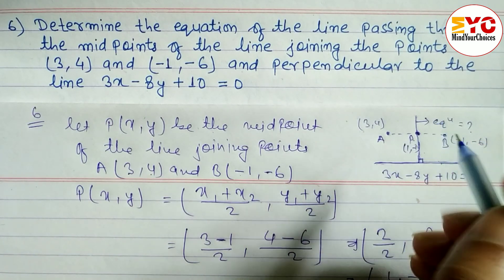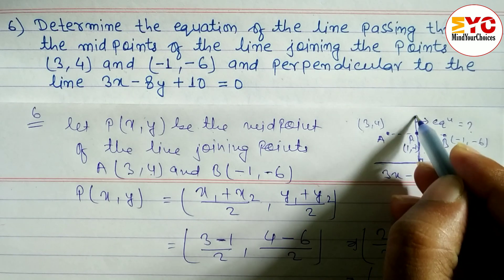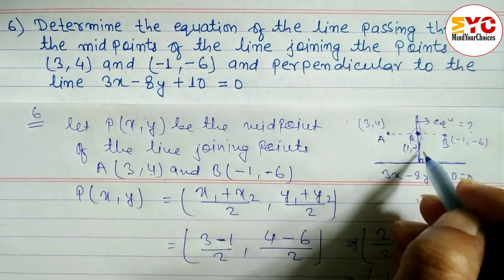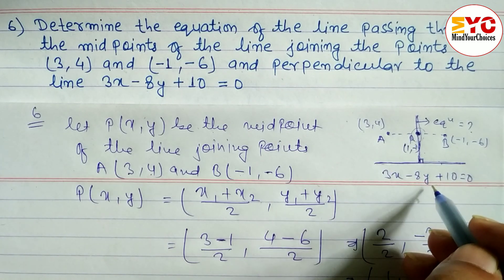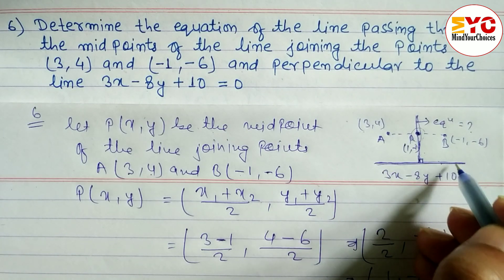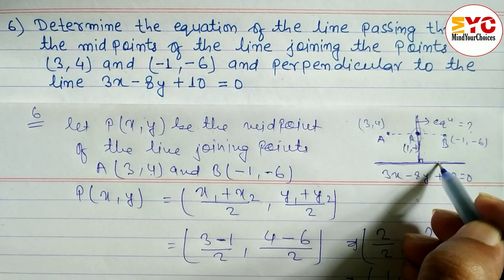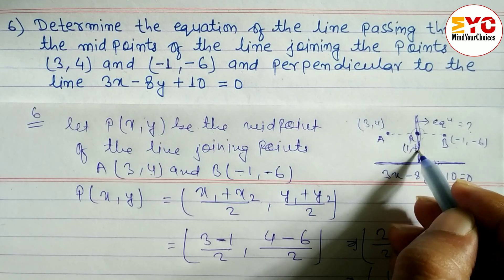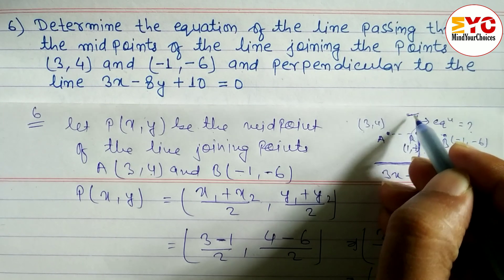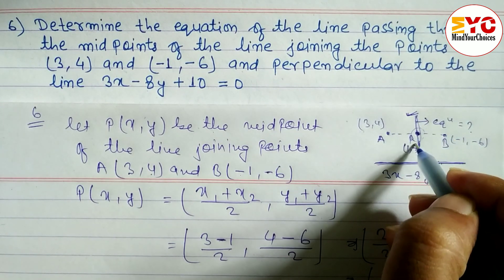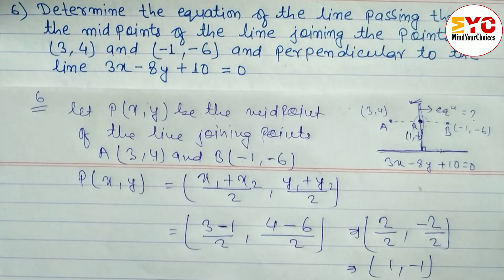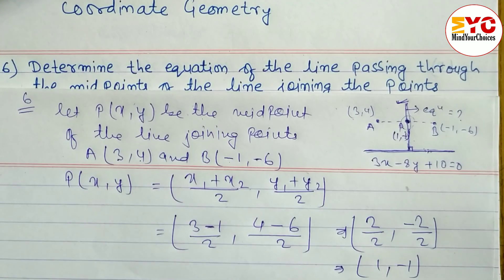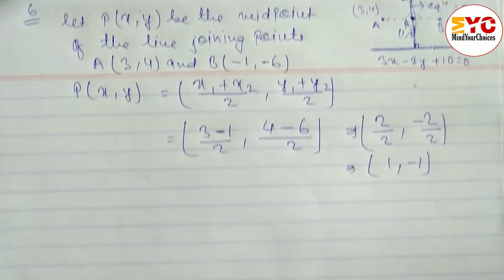Now we have one point: (1, -1). To find the equation of the line, we also need the slope. To find the slope, we first find the slope of the given line, since the two lines are perpendicular and their product of slopes equals -1. So let's find the slope.